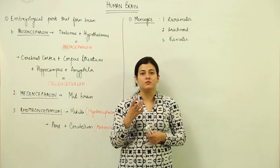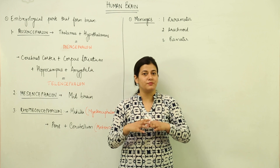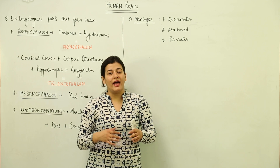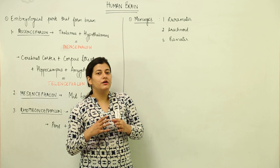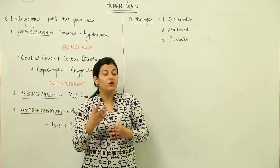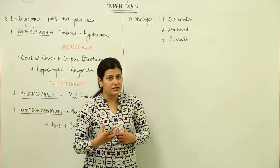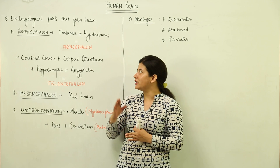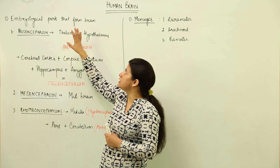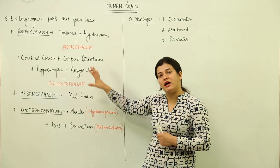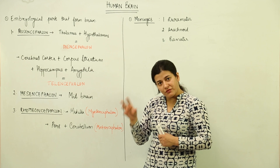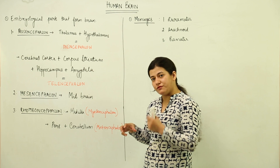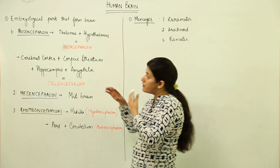What we are going to study here is a small introduction to the structure of the brain — how this particular organ is organized, what is the tissue organization, and what are its components. When we study an organ of this complexity, we first try to understand the embryological derivatives of that particular organ. So the first thing is going to be an introduction to the embryological parts which have given rise to the parts of the brain.